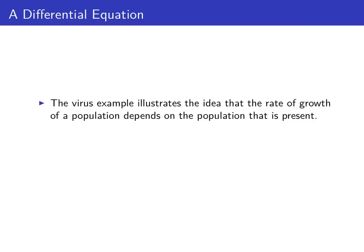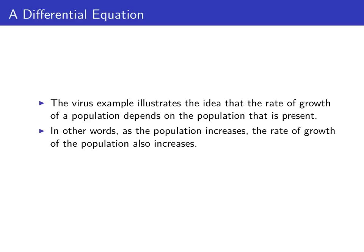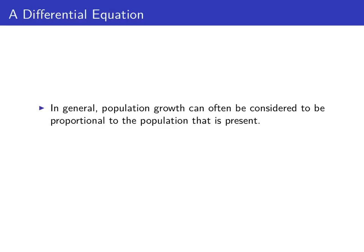This example illustrates an important idea: the rate of growth of the virus population depends on how many virus we have. The larger the population of virus, assuming an 11 percent growth rate, the faster the population is going to grow. In other words, as the population increases, so does the rate of growth, and this should be expected — when you have a large population there are more individuals to reproduce. In general, when modeling population growth we often make the assumption that the rate of growth of the population is proportional to the population.